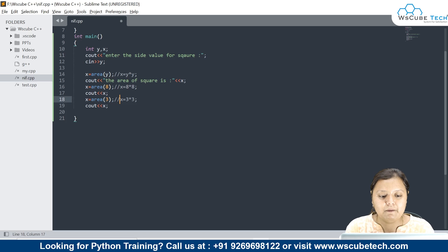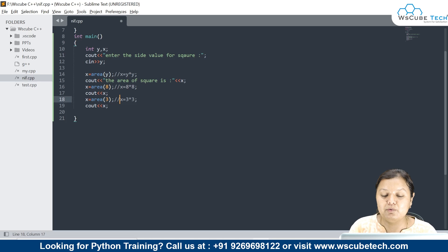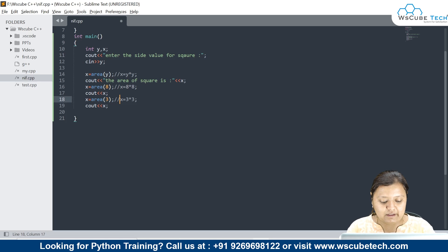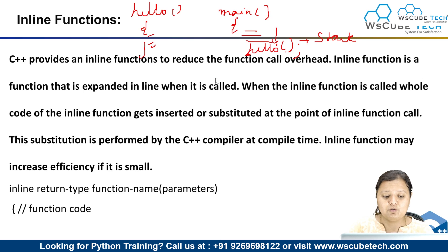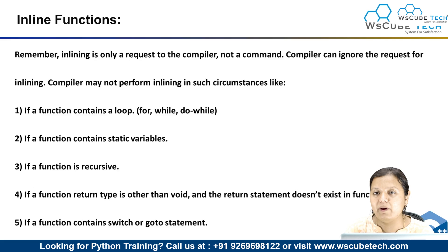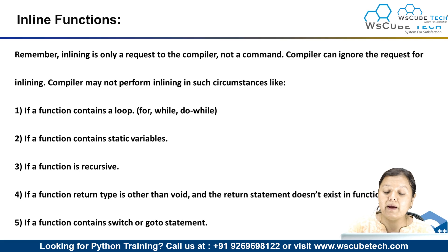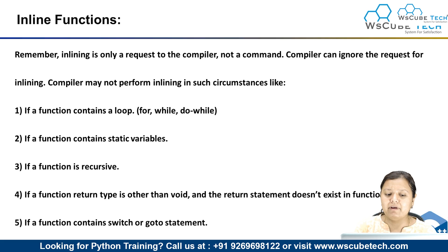When you declare a function as inline, the compiler substitutes it, so the function overhead is reduced. Other than that, inline functions have no extra special functionality — the only benefit is reduction of function overhead. Now, declaring inline is just a request to the compiler, not a command. The compiler can ignore your request if the function contains a while loop, do-while loop, goto statement, recursive call, or static variables.